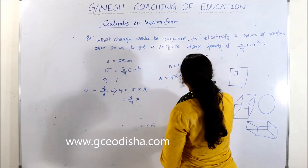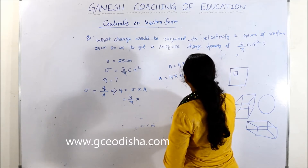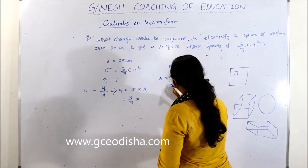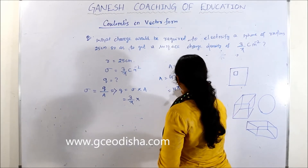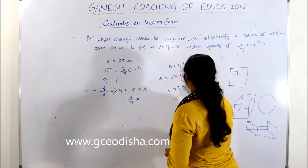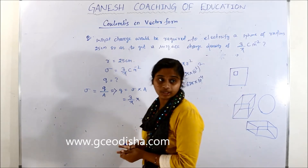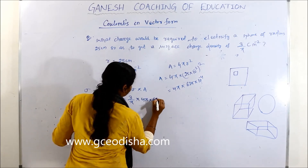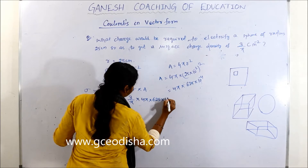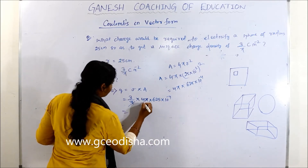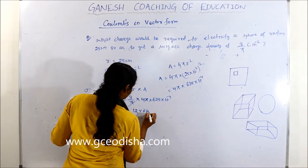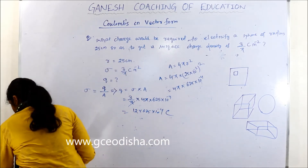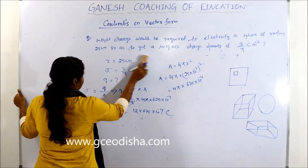Substituting: sigma equals 3 by pi coulomb per meter squared. A equals 4 pi into R squared, where R equals 25 centimeter equals 25 into 10 to the power minus 2 meters. So A equals 4 pi into 625 into 10 to the power minus 4. Pi cancels, giving 4 into 625 into 10 to the power minus 4, multiplied by 12 into 625 into 10 to the power minus 4.